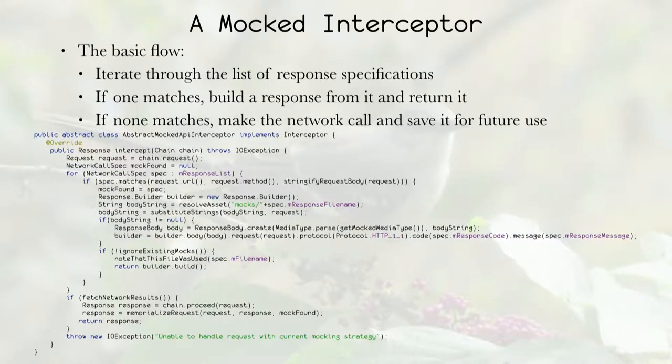So I loop through all of my network specs or network call specs and I see if they match. If they match, then I'm going to build up a response and pass it back. If they don't match, then I fall through and actually hit the network. And then I make that memorialized request call that's going to build up what I need to mock it in the future.